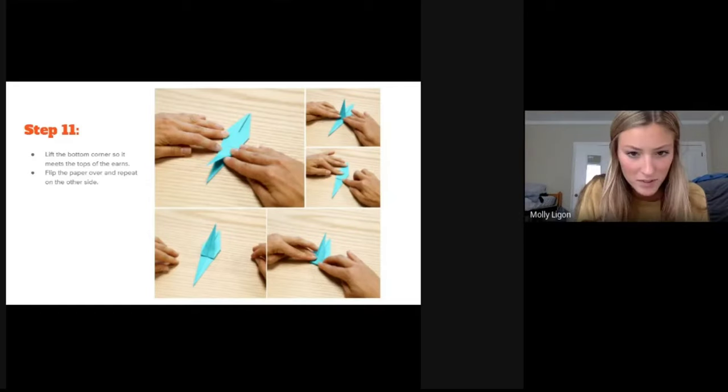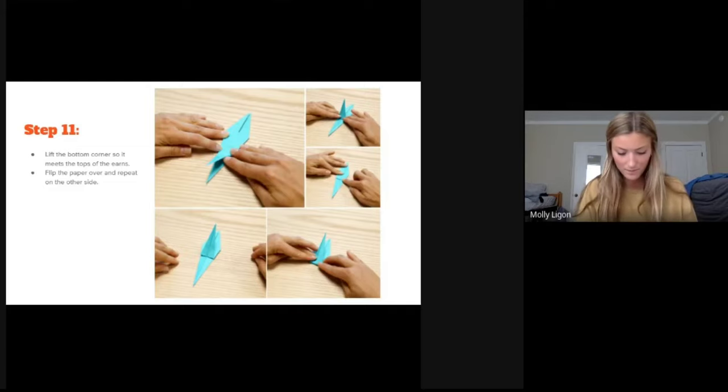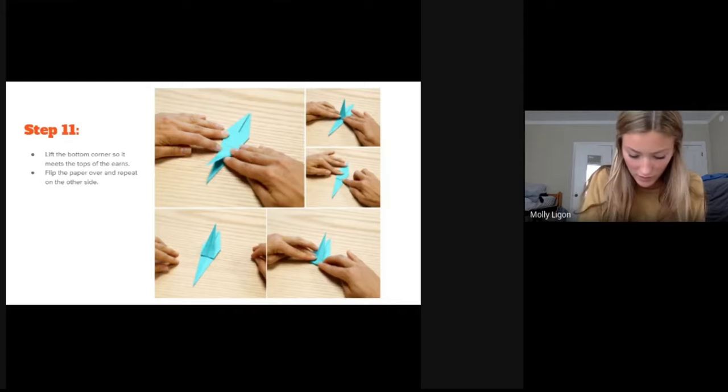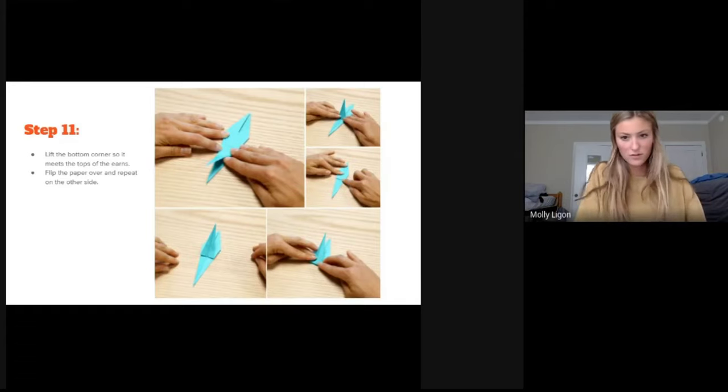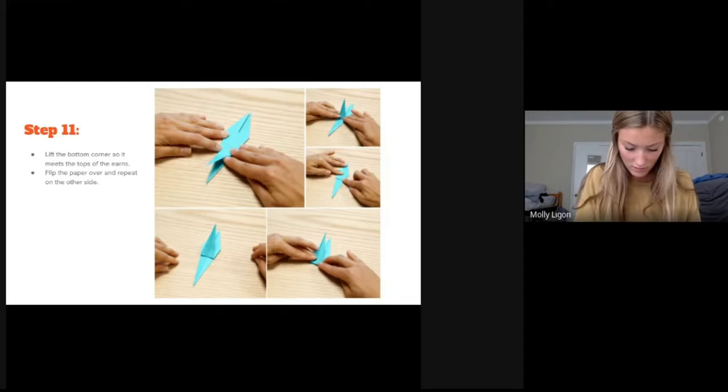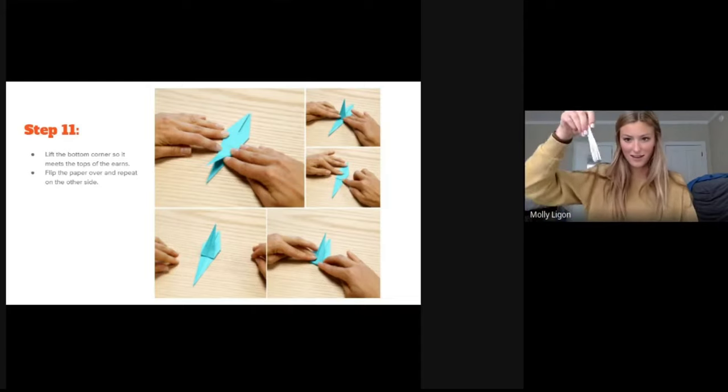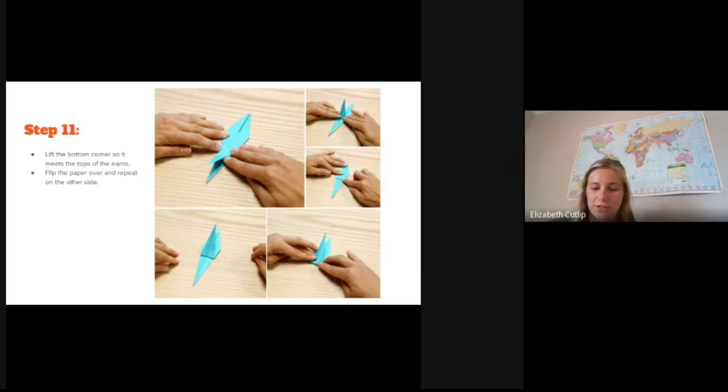So here's the next one. So now you need to lift the bottom corner, the one that's pointing at you, and flip it up to the top corner. And make sure that the points line up. And then flip it over and do the same thing on the other side. Yeah, that last step was a little confusing and I got it. So you just need to expand it and open it like a book and kind of crease it on itself and then flip them up.